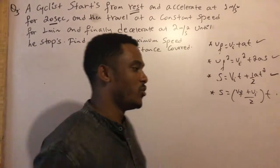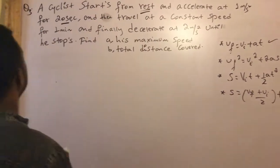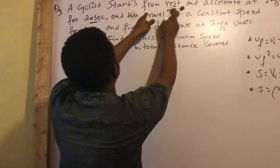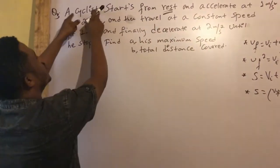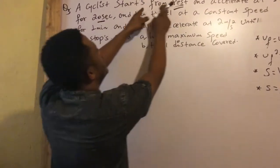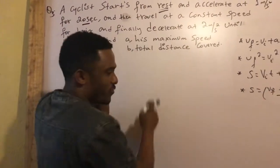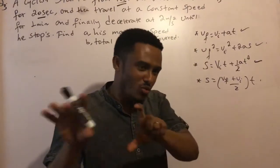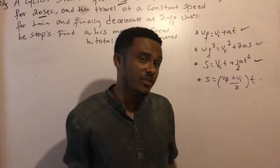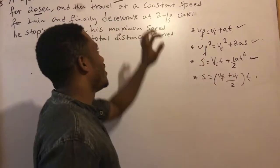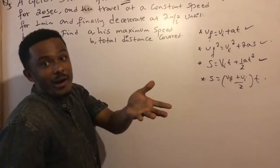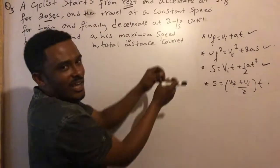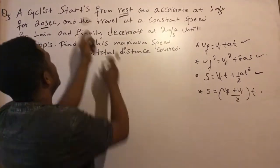Let's get into the third problem. It says that a cyclist starts from rest. Physics is kinematics — it's easy. Start from rest means V initial is zero.